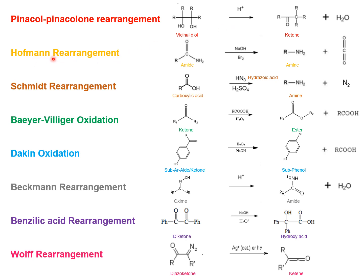Next we have Hoffmann rearrangement. In Hoffmann rearrangement, the reactant is a carboxylic amide. This amide reacts with alkaline bromine or sodium hypobromide to get converted into a primary amine. This rearrangement involves loss of the carbonyl carbon in the form of carbon dioxide, so the product has one carbon less than the reactant — this is also called Hoffmann degradation. Important intermediates formed include isocyanate, N-bromamide, and bromonitrine, all of which have been isolated as evidence for the mechanism.